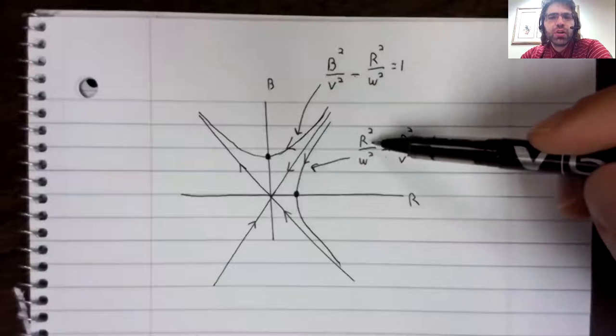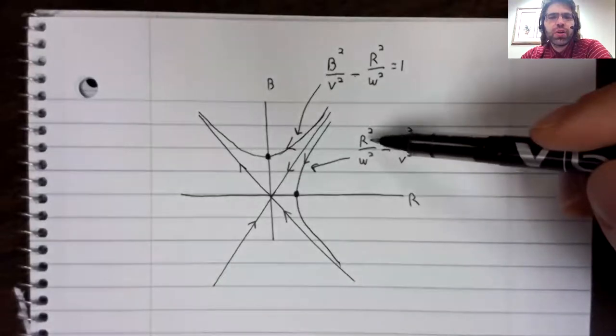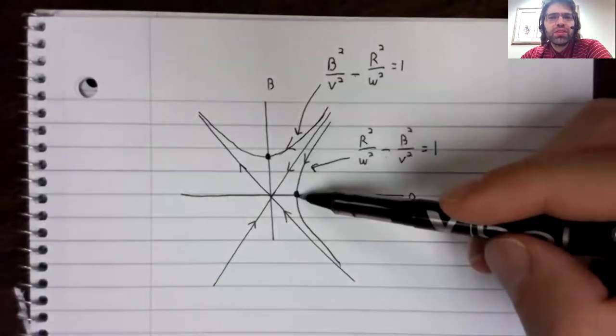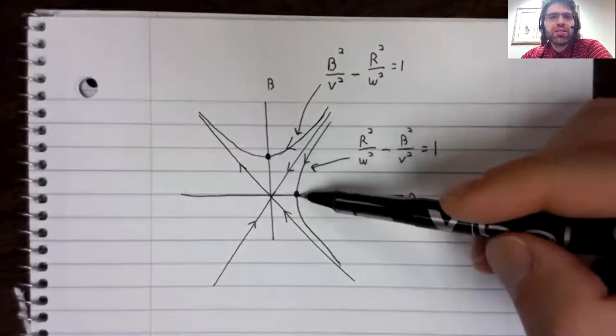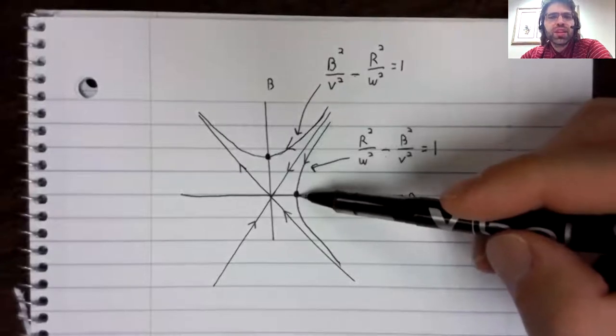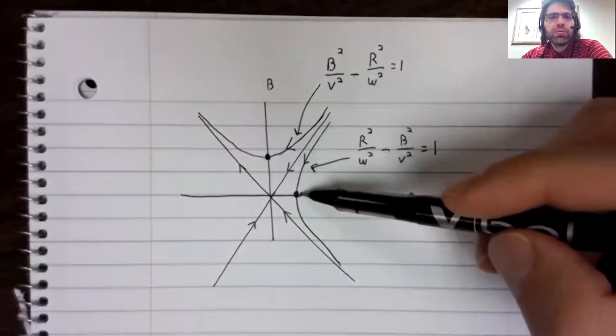If the R squared term is first, the vertex is on the R axis. This represents Blue Army being wiped out.